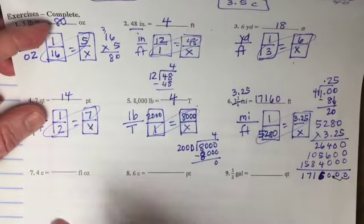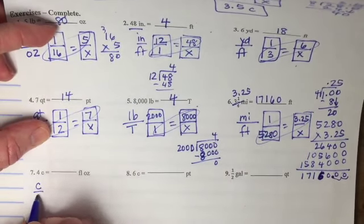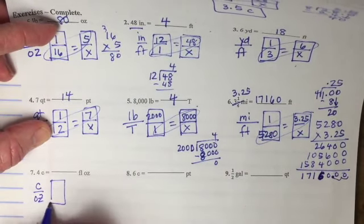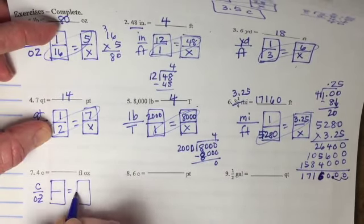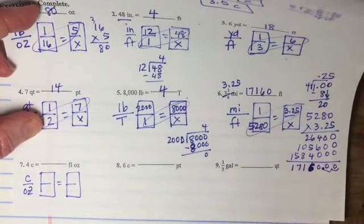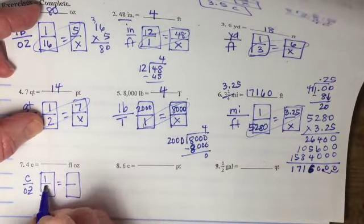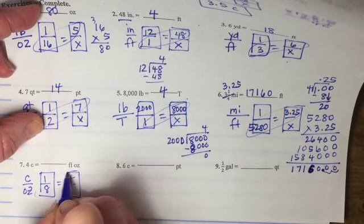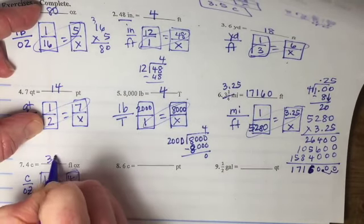And the last row, four cups and fluid ounces. So I'm just going to use cups to ounces. And I can tell at the top that it says that one cup is eight ounces. So I'm going to fill in the four and then multiply. This would be 32 ounces.